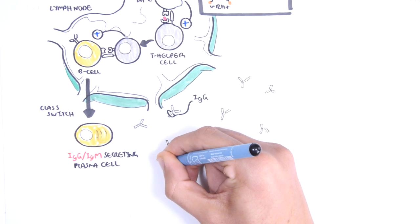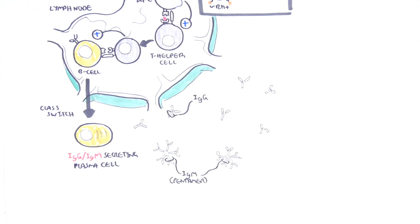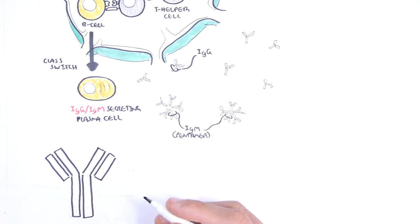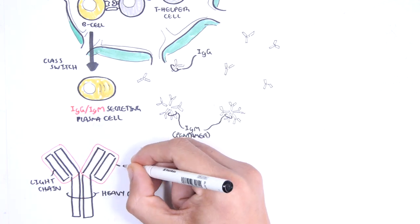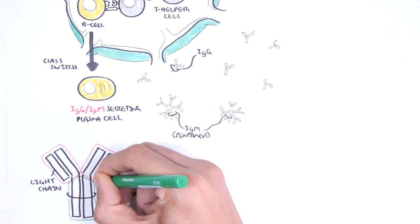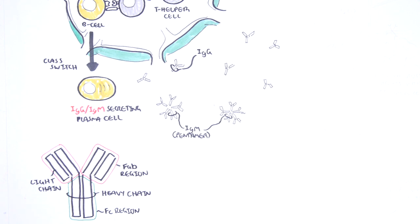IgG is a single monomer that circulates in the bloodstream, and IgM is a pentamer — five antibodies bound together — and is usually the first antibody produced against an antigen. Both IgG and IgM immunoglobulins can activate the complement system. The basic structure of an antibody involves inner heavy chains and outer light chains. The FAB region is the antigen-binding fragment region that binds two antigens. The FC region, also known as the fragment-crystallizable region, is able to bind to certain receptors and is responsible for activating the complement proteins.